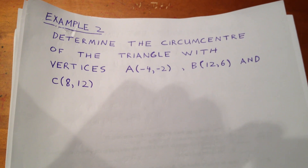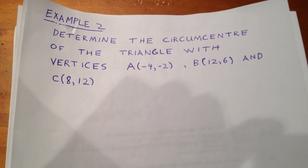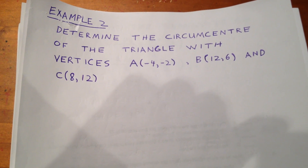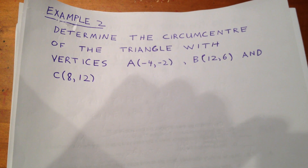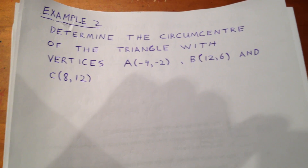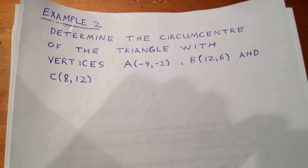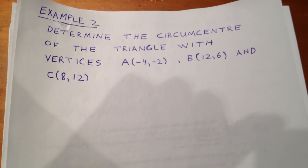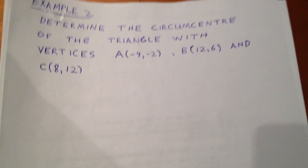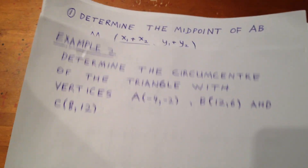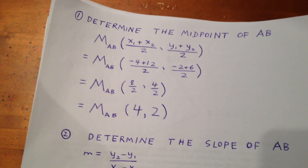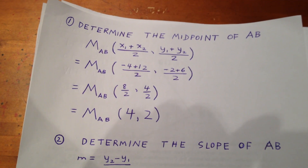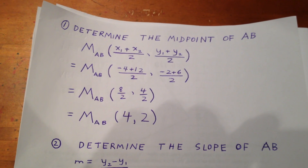In our next example, we want to determine the circumcenter of a triangle with vertices at A(-4, -2), B(12, 6), and C(8, 12). In order to do this, we'll first determine the midpoint of the line segment AB.